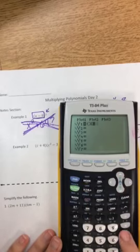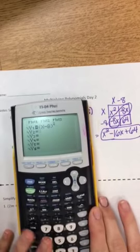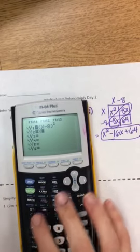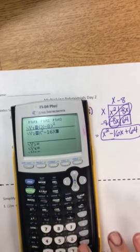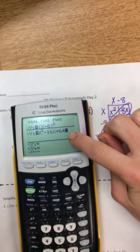you can simply go to y equals, put the problem in y1. So, just the problem that they give us. And the answer in y2. So, because we're saying if I simplify this, I should get this.